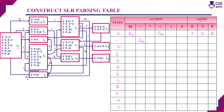For state I2: E derives T dot is a final item. From I2 with terminal symbol star, the new state is I7, so we enter S7 in the action part. Now I2 state is complete. State I3 contains only a final item.